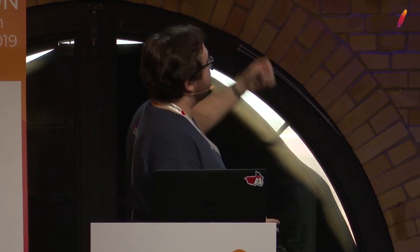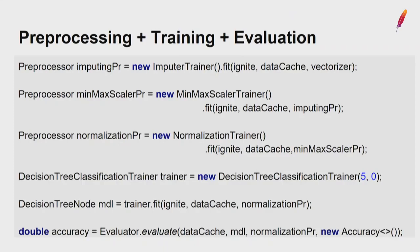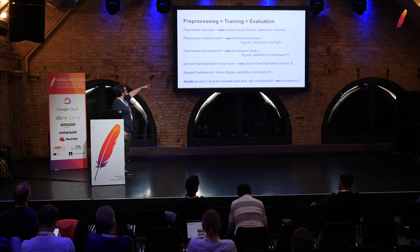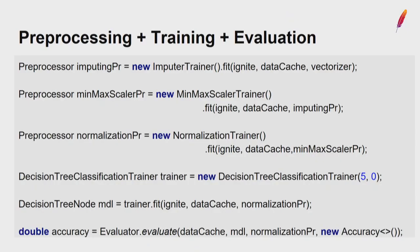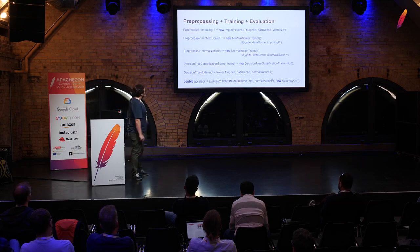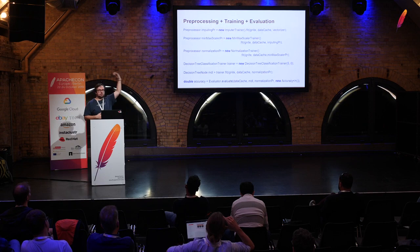Let's combine pre-processing, training, and evaluation together. We define previous steps: imputing to fill missing values, min-max scaling, and normalization if needed. The second preprocessor uses a link to the imputing preprocessor; the normalization preprocessor uses the min-max scalar preprocessor; and the decision tree classification trainer uses the last one — the normalization preprocessor. All calculations are lazy: no calculations run when you call feed on the preprocessors, but all calculations start from the first preprocessor when you call the trainer feed.